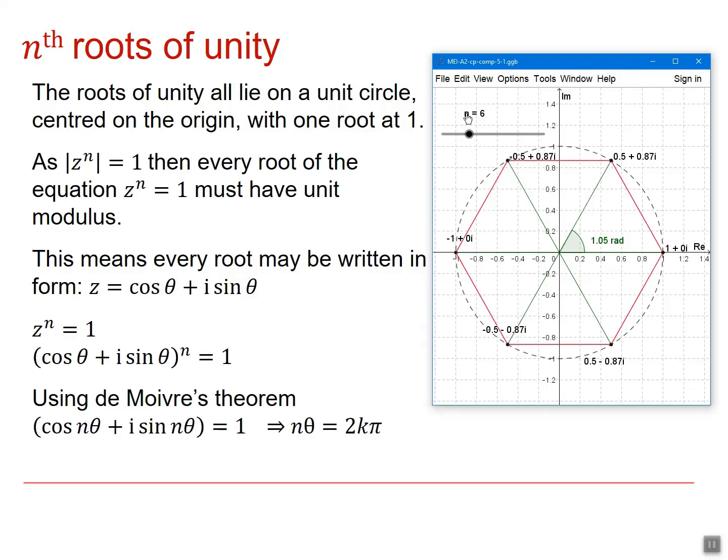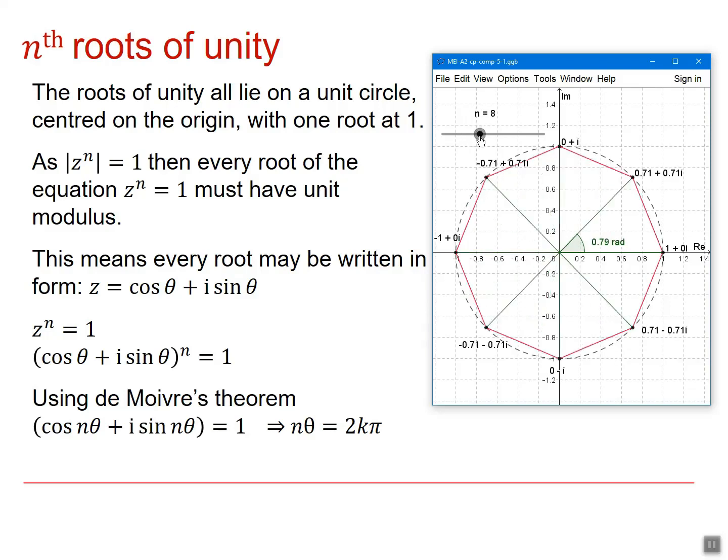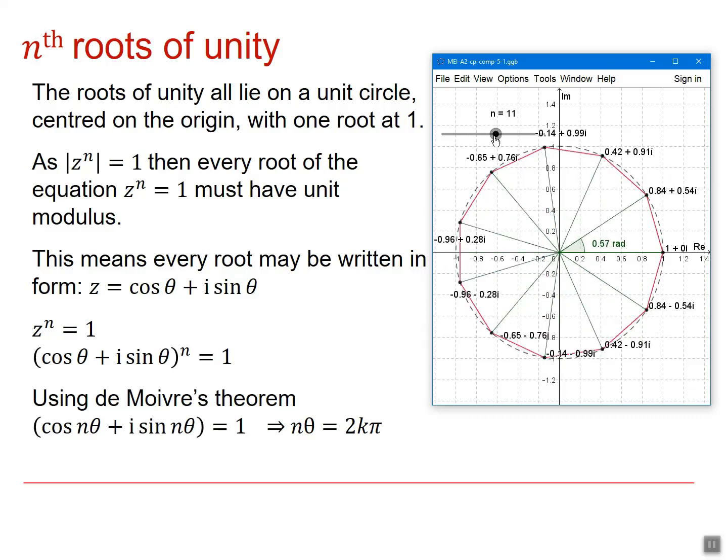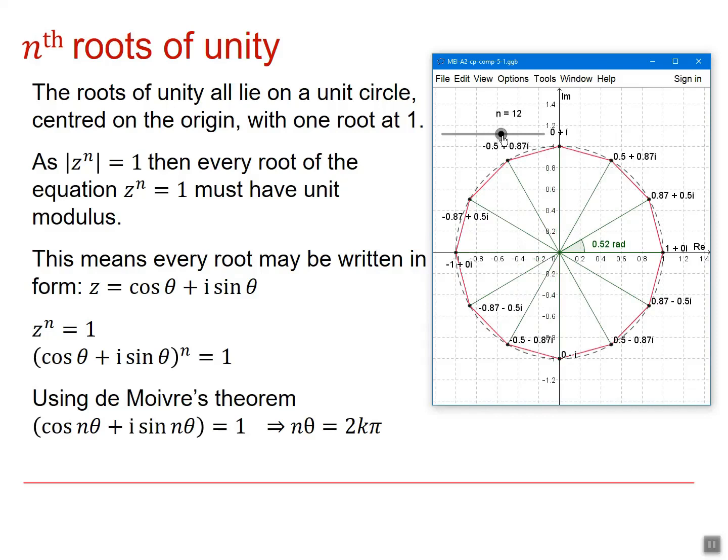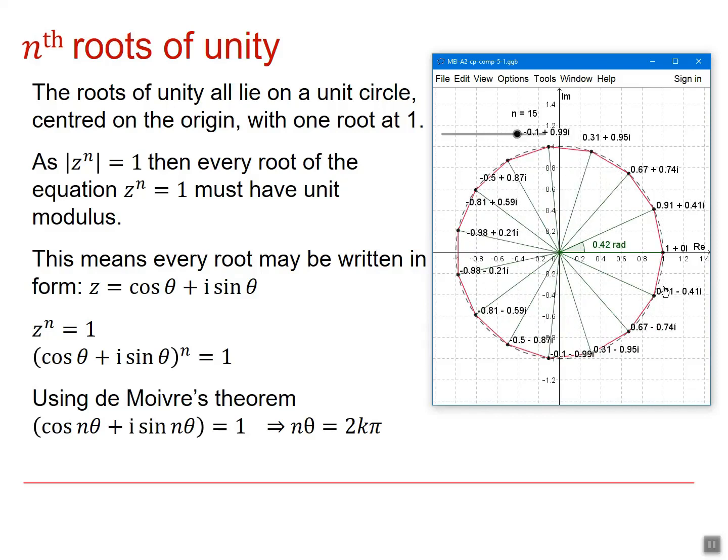If I change the value of n, then I just up the number of solutions and therefore I get an increase in the number of points around the circle. So if I go up to 15, you can see I get 15 roots for z to the 15 equals 1.